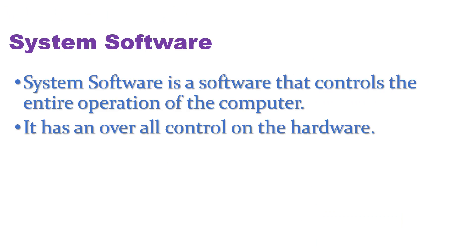System software is a software that controls the entire operation of the computer. It has overall control on the hardware and is a very important part of a computer system. Without system software, the computer is like a car without a driver.